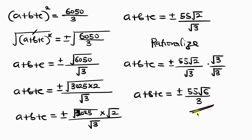Root 3 times root 3 is root 9, which equals 3. So our final answer is a plus b plus c equals plus or minus 55 root 6 over 3. Feel free to share your ideas in the comment section. If you enjoyed this video, give it a thumbs up, subscribe, and turn on the notification bell so you don't miss upcoming videos. Until next time, take care.